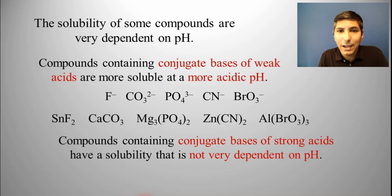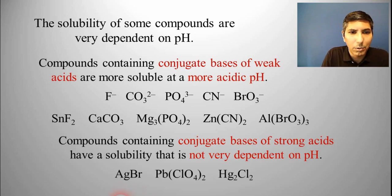Now, compounds that have conjugate bases of strong acids, well, those have solubilities that aren't very dependent on pH, generally speaking. So, we know that bromide, and chloride, and iodide, and perchlorate, those are conjugate bases of strong acids. And so, these substances, if you get this more acidic, it's not really going to change the solubility very much.